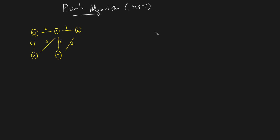In this video we will be learning about Prim's algorithm. Prim's algorithm is used for finding the minimum spanning tree. If you do not know what a minimum spanning tree is, I highly recommend you watch my previous video where I explained it. For this given graph, the minimum spanning tree will look something like this and the weight of the minimum spanning tree will be 16.